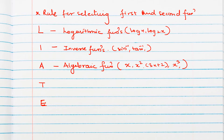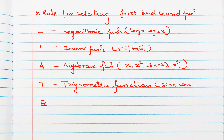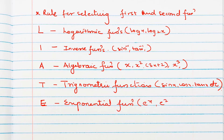T stands for trigonometric functions — sin x, cos x, tan x, etc. And E stands for exponential function — e power x, e power 2x, like that.